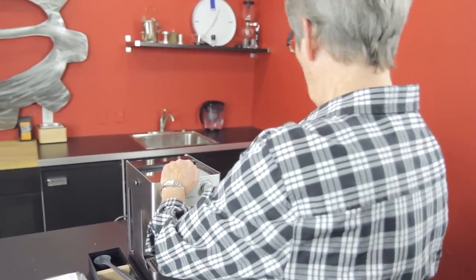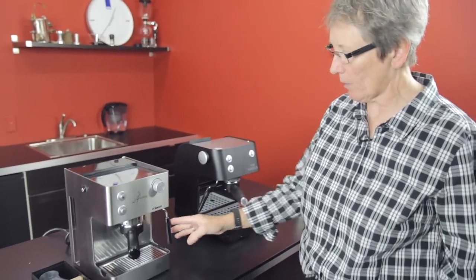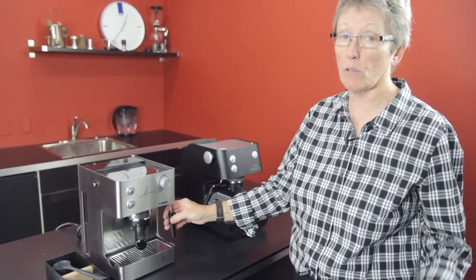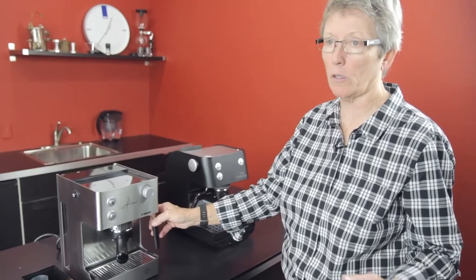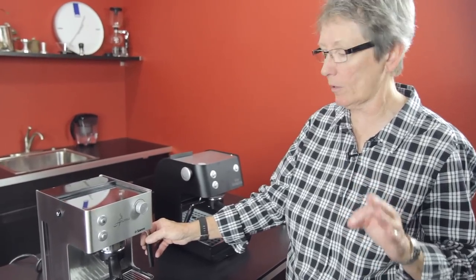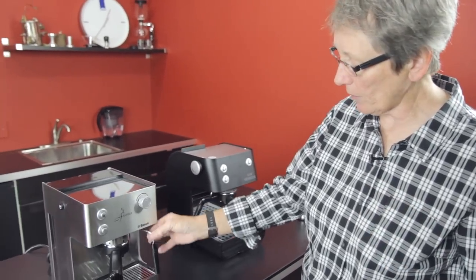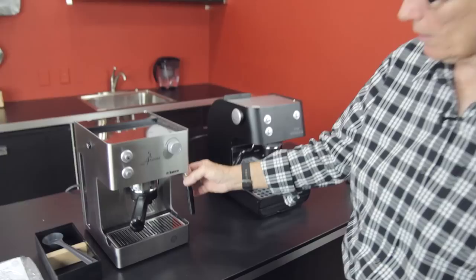One of the key features between these two machines is they both have the Panarello steam arm, which produces a lot of foam. They don't have the traditional steam arm like other machines where you can control the foam. You're going to get a lot of foam. This one goes side to side on the Aroma.